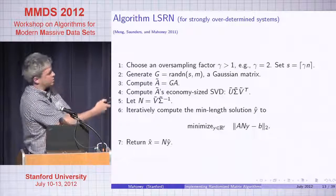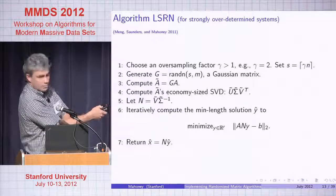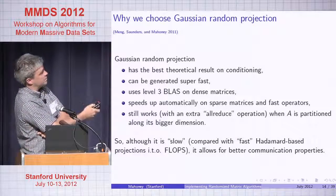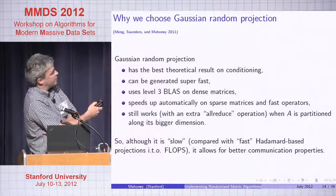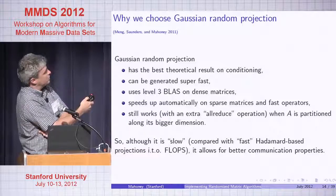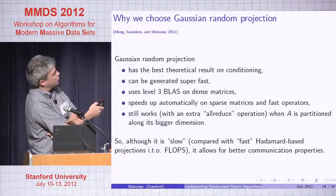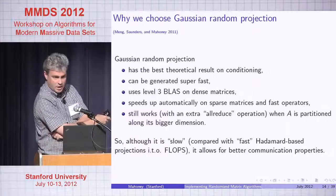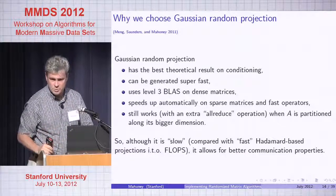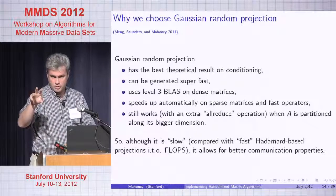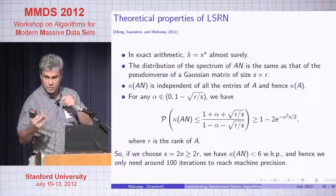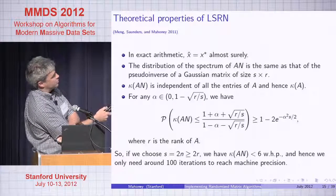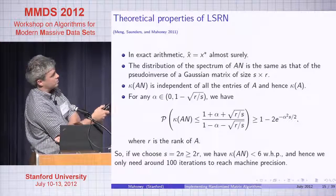We're using a Gaussian here because it has the best theoretical guarantees on conditioning, can be generated very fast with non-trivial methods, and uses Level 3 BLAS on dense matrices. It works with sparse matrices and fast operators and needs an extra all-reduce operation when A is partitioned along the larger direction. Although it's slow in terms of flops, in these settings communication is more expensive than flops, so it has a better communication profile. Importantly, the distribution of the spectrum of A times the projection doesn't depend on A — only on the spectrum of a certain Gaussian matrix. If you choose 2N columns, your condition number is 6; 3N gives 4. It's a constant.